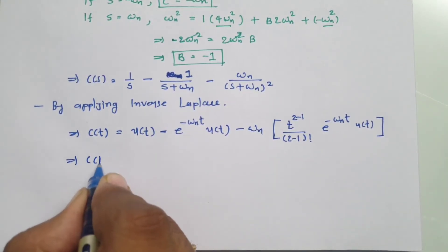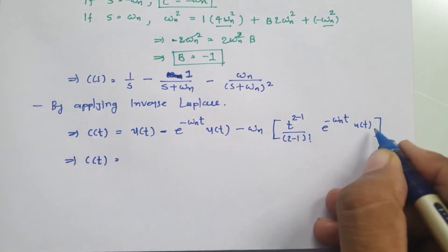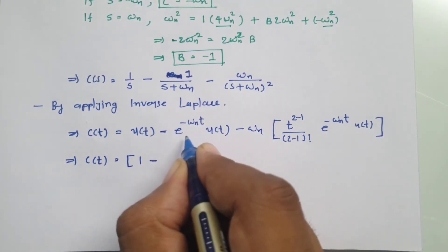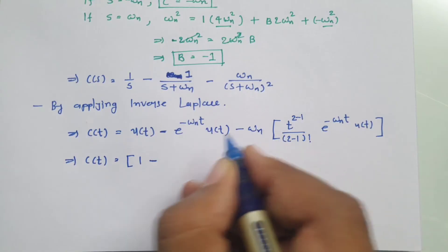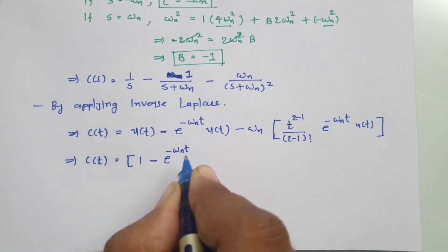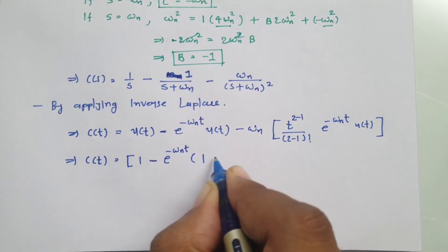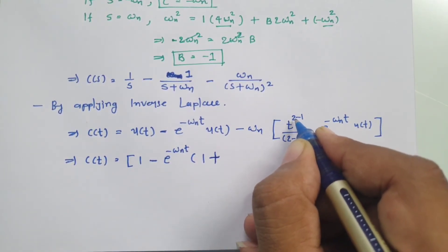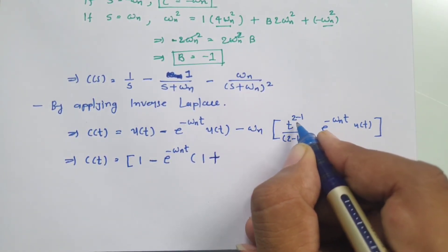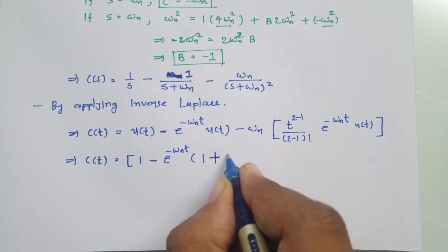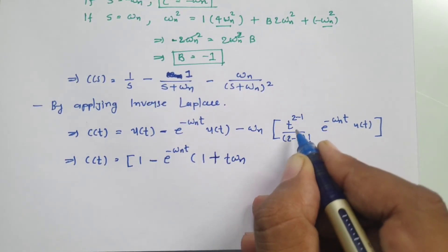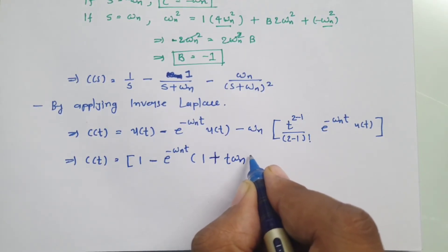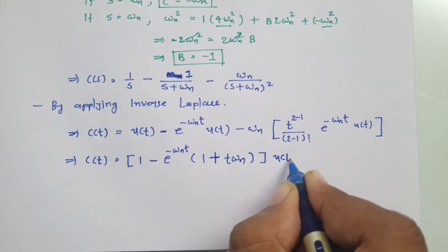Simplifying, c(t) equals U(t) times the quantity 1 minus e to the power of minus omega_n t times (1 plus omega_n t). This is the output response for the second order system with the critically damped case.